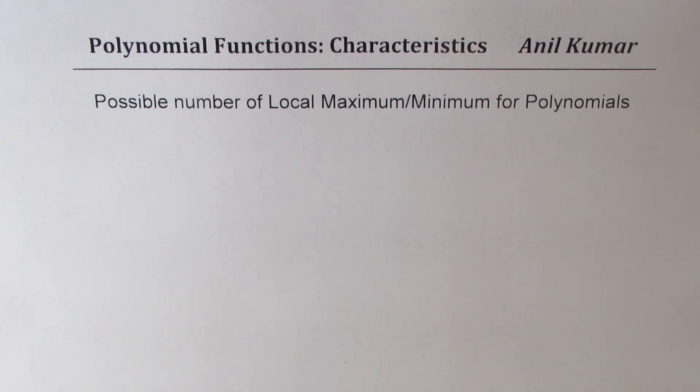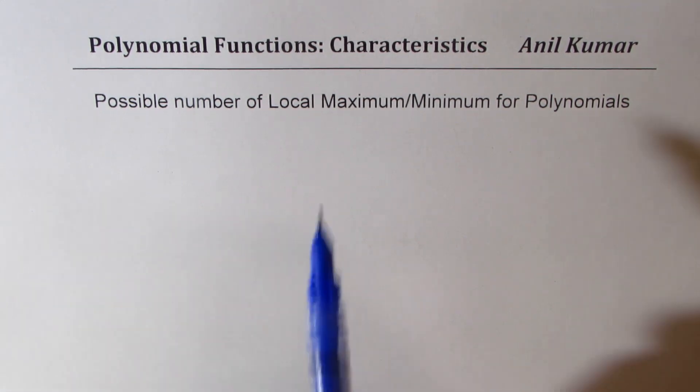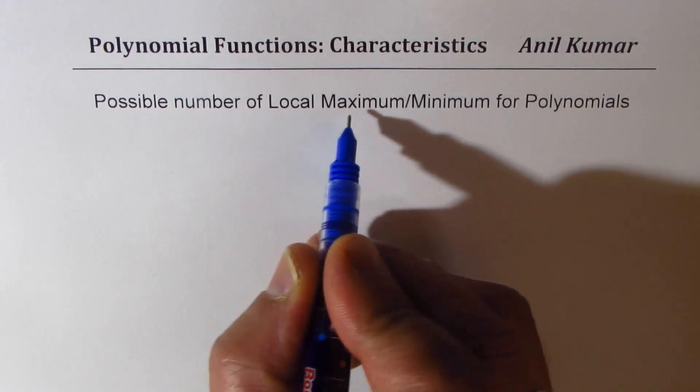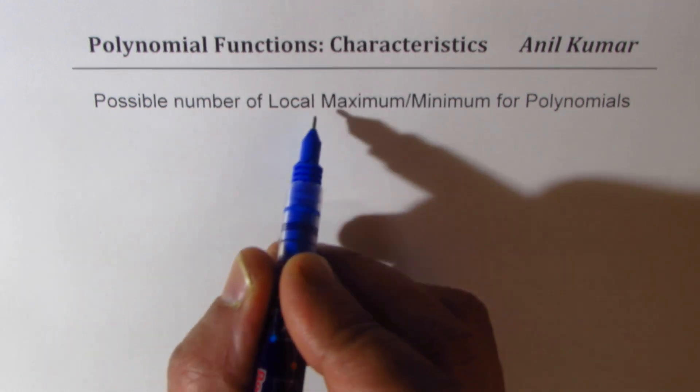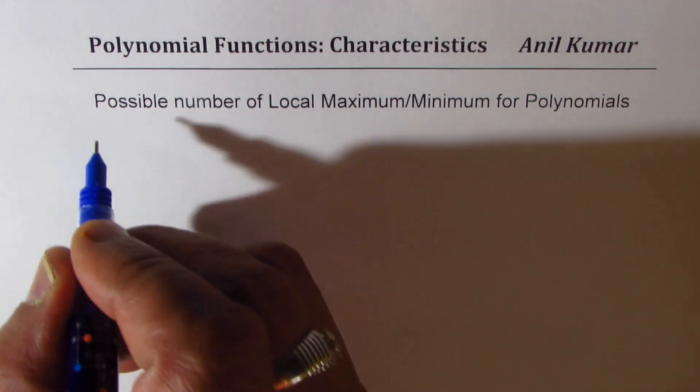I am Anil Kumar. Let me thank all my viewers and subscribers for taking keen interest in my videos and posting excellent questions. Here is a question from one of my subscribers who wants to understand how to find the possible number of local maximum or minimum for a polynomial function. You should remember that local maximum or minimum occurs only at turning points.